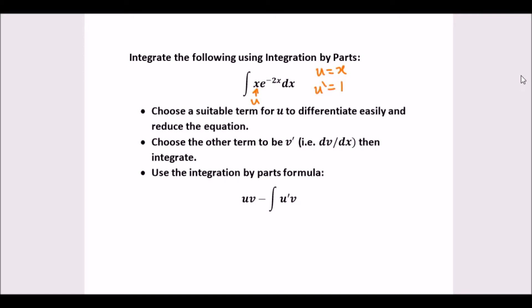Next we need to choose v prime. In other words, the remaining term has to automatically be assigned v prime. So we put v prime equals e to the negative 2x, and now integrating this to get v, we integrate e to the negative 2x by looking at its power, giving us v equals e to the negative 2x over negative 2.